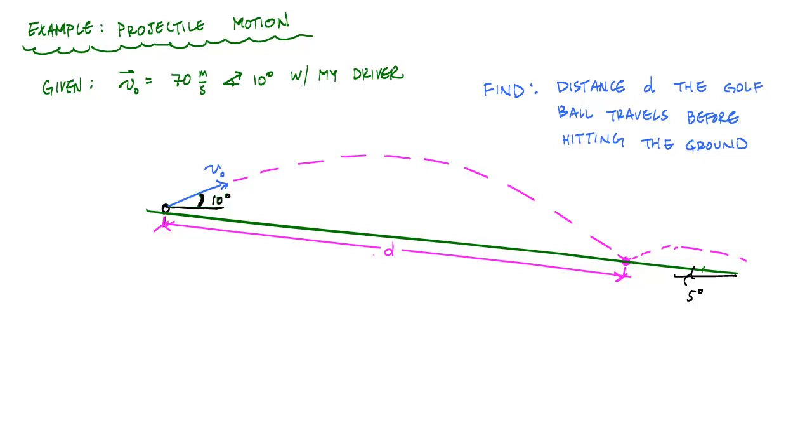We're doing some projectile motion problem here where if I'm a golfer, if I can hit the golf ball with my driver at 70 meters per second upon impact at an angle of 10 degrees here, I want to know how far it's going to travel this distance of D if the ground is inclined at 5 degrees here. And I'm going to neglect things like air resistance and the pin height and stuff to solve this problem.